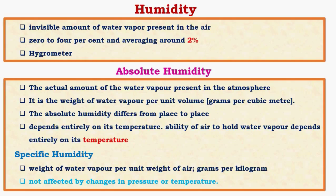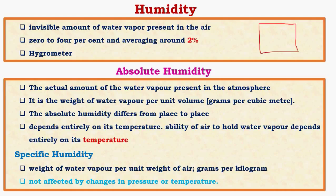So what is humidity? Humidity is nothing but the invisible amount of water vapor present in air. It varies from 0 to 4%, averaging 2% by volume. Absolute humidity tells about the actual amount of water vapor present in the atmosphere at a particular temperature and time. It is expressed in grams per cubic meter — that is, how many grams of water vapor are present per cubic meter of air. It is dependent on temperature and varies from place to place.